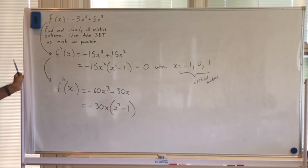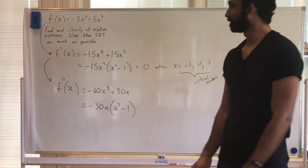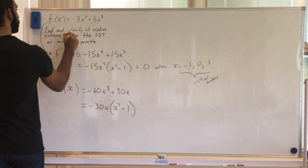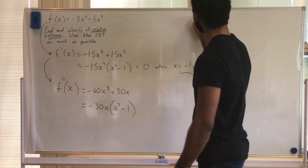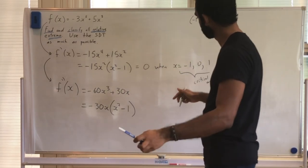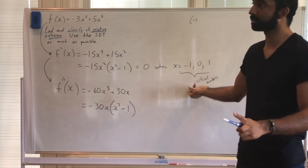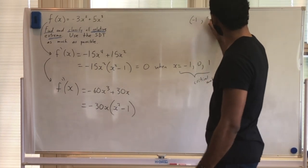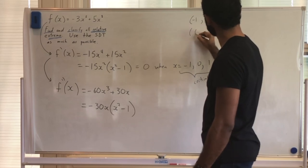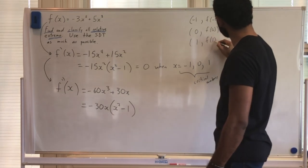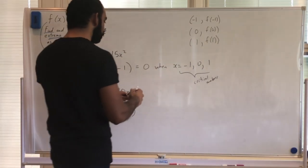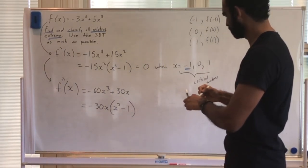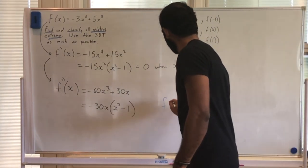Do I have to set the second derivative equal to zero for this problem? No — we only do that when finding inflection points, and this question asks to find and classify relative extrema. I've already found my potential relative extrema at negative one, f of negative one; zero, f of zero; and one, f of one. For the second derivative test, I take these c values and plug them into the second derivative to see whether it's positive or negative.